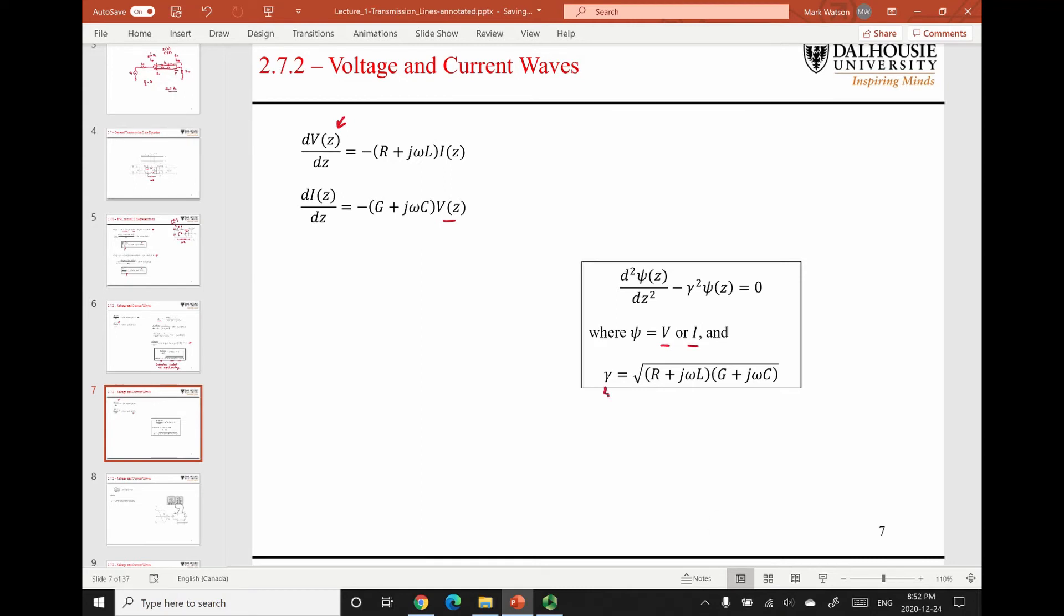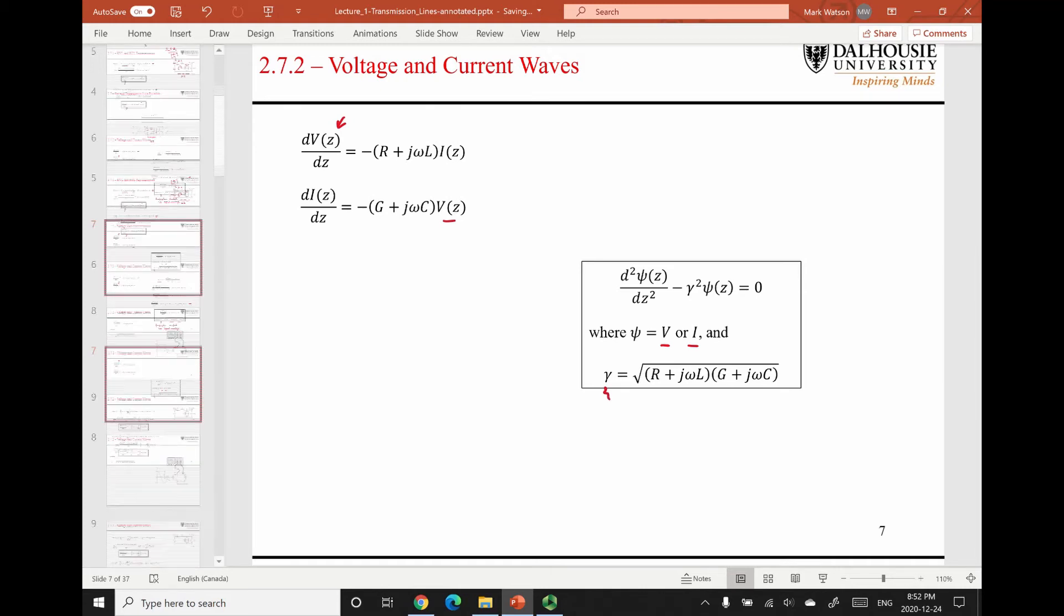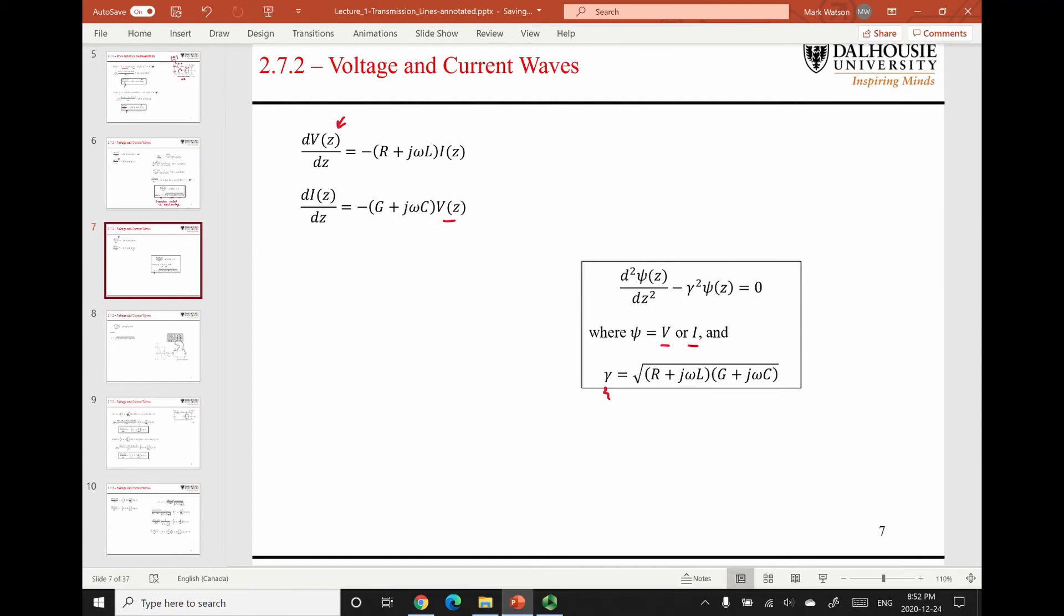They both have this propagation constant term here. So what this tells us is that in RF systems, where there's voltage and current signals propagating on a transmission line, those signals propagate as waves.